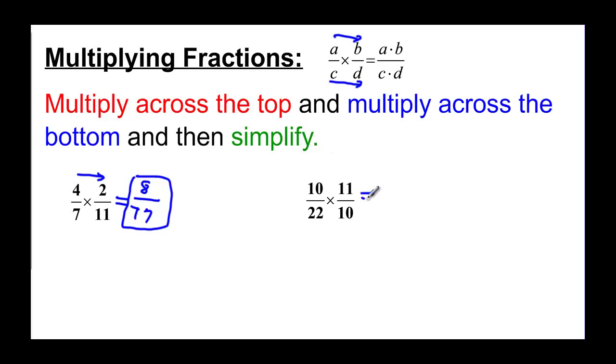In this one we multiply straight across and we have 110 when we multiply 10 times 11, and we have 220 when we multiply 10 times 22. But they're both divisible by at least 10 because we see these zeros here. So let's divide off the 10 from both and we end up with 11 over 22.